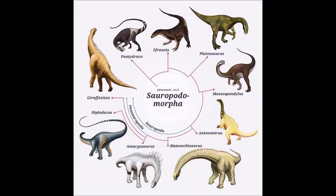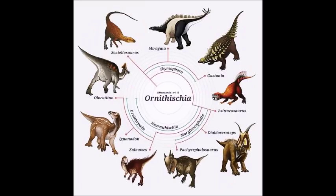So that wraps up sauropodomorph phylogeny. The earliest sauropodomorphs appeared in the late Triassic, underwent diversification in the early Jurassic, and lasted all the way into the Cretaceous period. They grew from small herbivores into the largest terrestrial vertebrates Earth has ever produced. In the next video of this series, we will be looking at the clade of bird-hipped dinosaurs called the Ornithischians. Thanks for watching, and I'll see you next time!